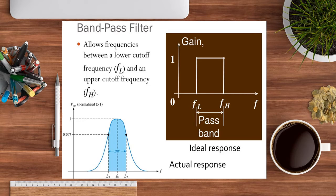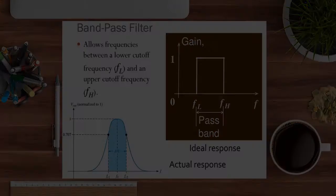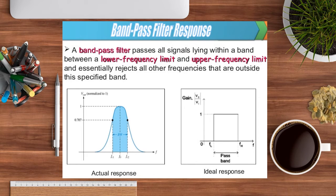The high pass filter cutoff frequency is also 1 divided by 2πRC. For the band pass filter, a particular range of frequency is passed — the pass band — from a lower frequency f1 to a higher frequency f2. The normalized voltage at the 3 dB points is 0.707 or 70.7 percent. The actual and ideal responses of the band pass filter can be clearly observed in the gain versus frequency curve.